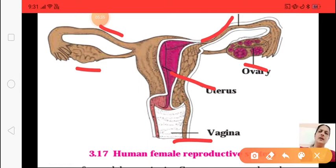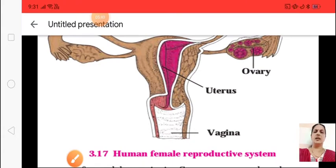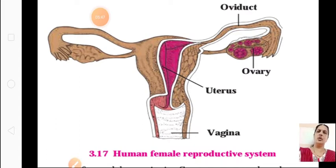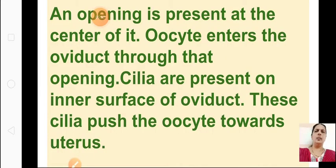Every month, one oocyte — ovum — is released from alternate ovaries. Once from the left ovary, then from the right ovary. It comes through the oviduct and then goes to the uterus. An opening is present in the center of it, and the oocyte, which is in the ovary, enters the oviduct through that opening.